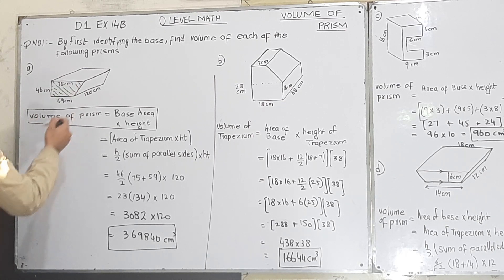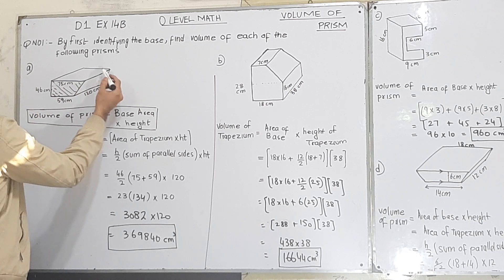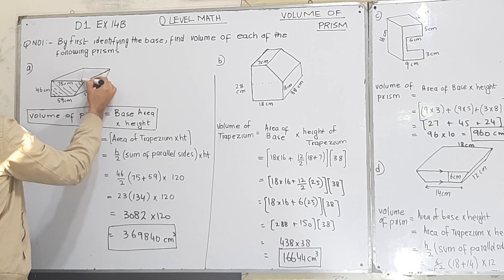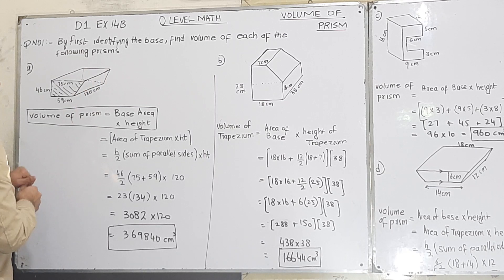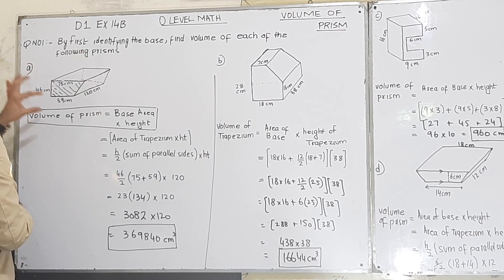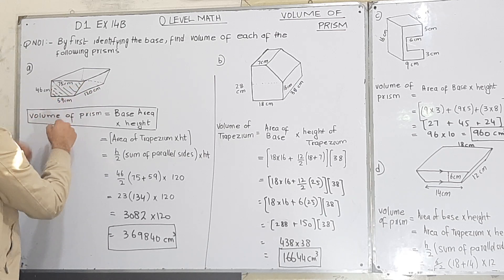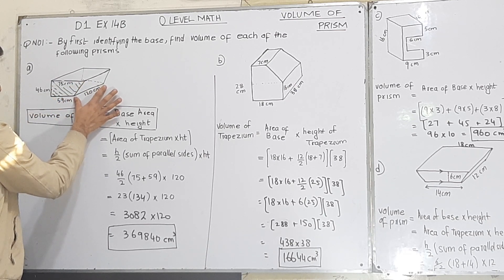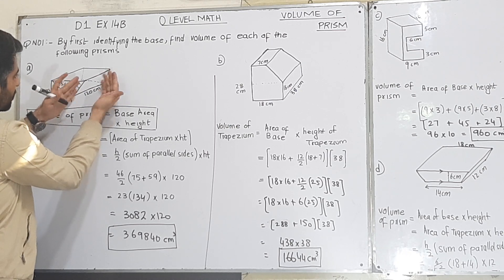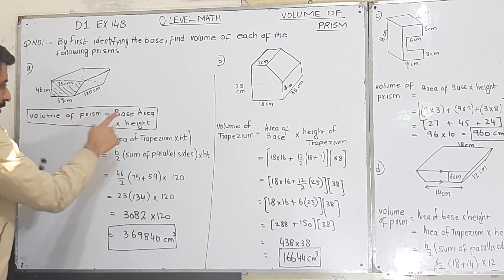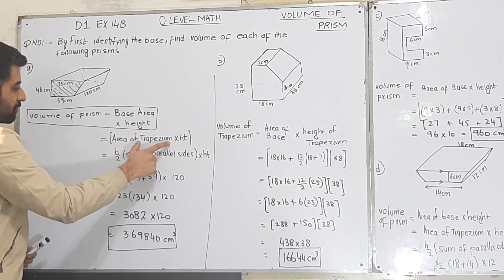This trapezium shape is at the front side and also at the back end, meaning it is present at both ends. So you have identical ends — this end and the back end are identical. This is your base. Volume of prism equals base area, which here is a trapezium, multiplied by the height — the distance between the front base and the back one.